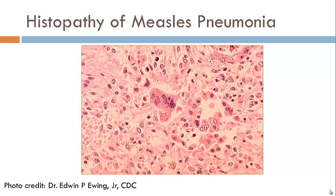Inside the body, the cells are overtaken by the virus. This is an image from a piece of infected tissue. What is characteristic of measles pneumonia are the large cells that have several intracytoplasmic inclusions.